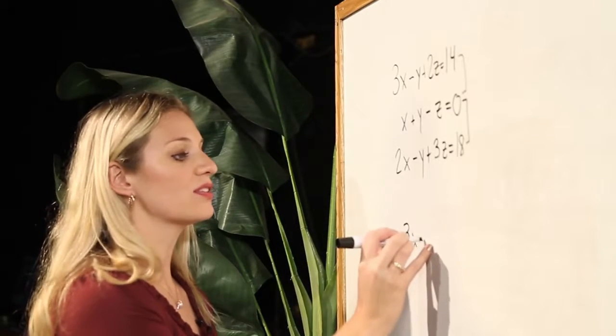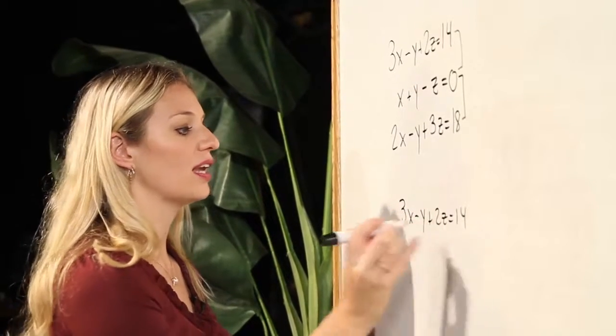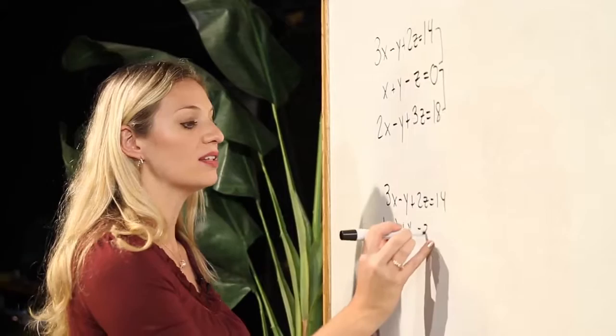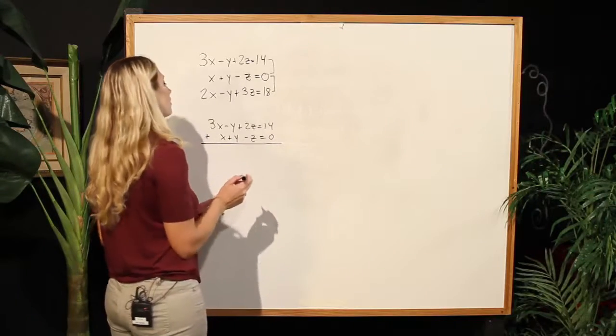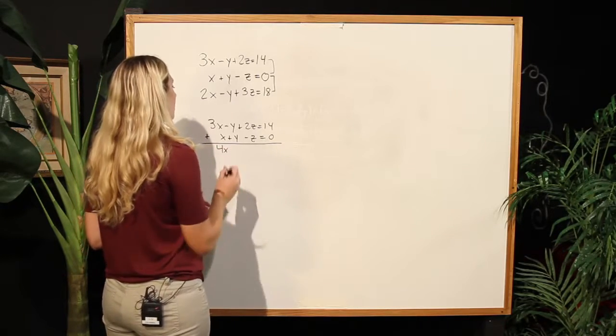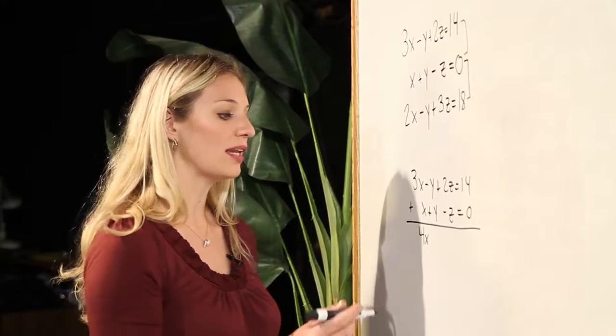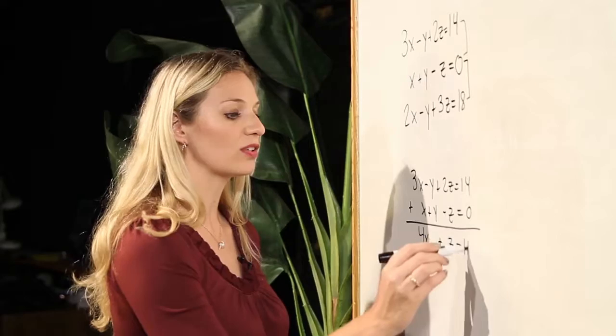I will have 3x minus y plus 2z equals 14, and I will add that to x plus y minus z equals zero. Adding the equations up, 3x plus x will give me 4x, minus y plus y will give me zero y, it has been eliminated, and I will have plus z equaling 14.